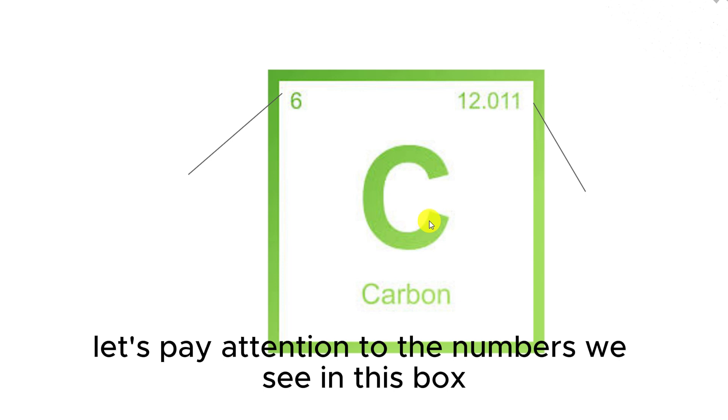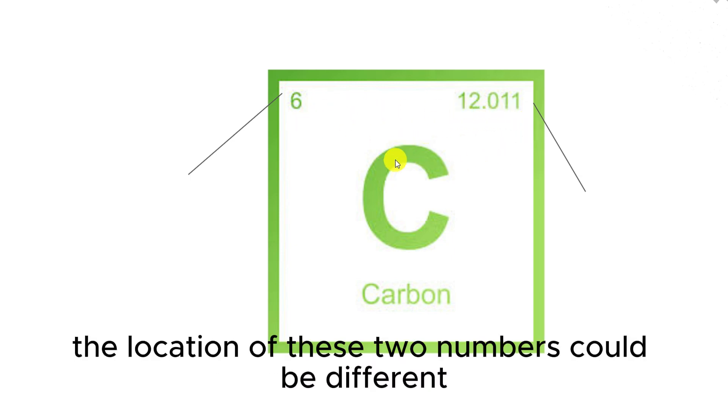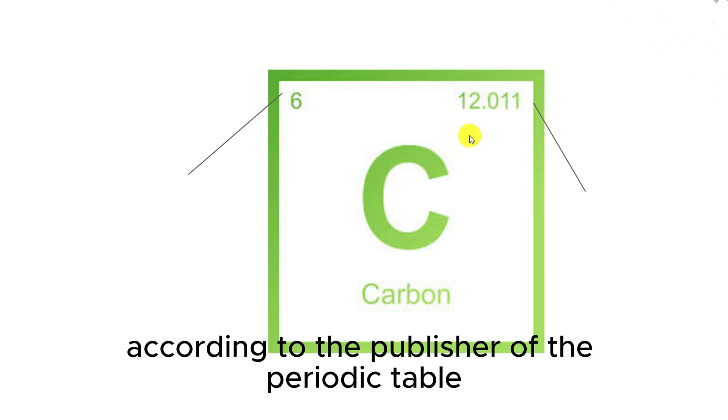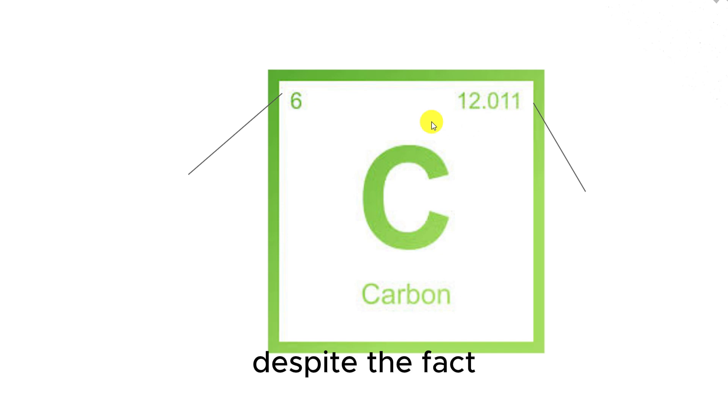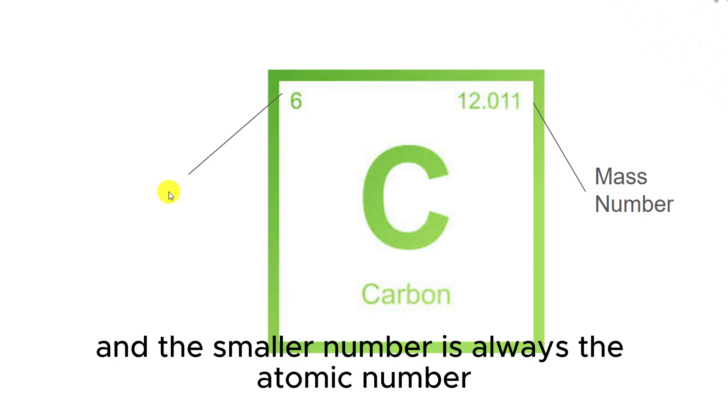Now let's pay attention to the numbers we see in this box. There are two numbers in two different places inside the box. As I mentioned before, the location of these two numbers could be different according to the publisher. Despite this, the bigger number is always the mass number and the smaller number is always the atomic number.